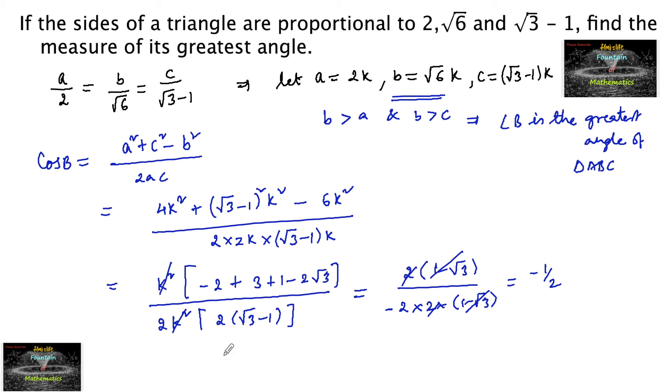Therefore we have cos B equals minus 1 by 2, so it is negative. Cos B is negative means it should be in the second quadrant.